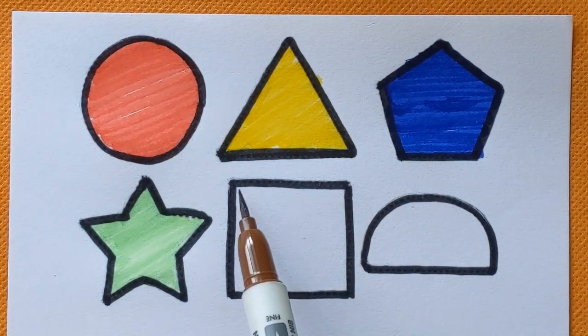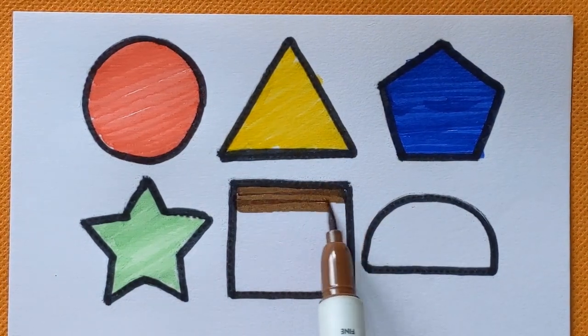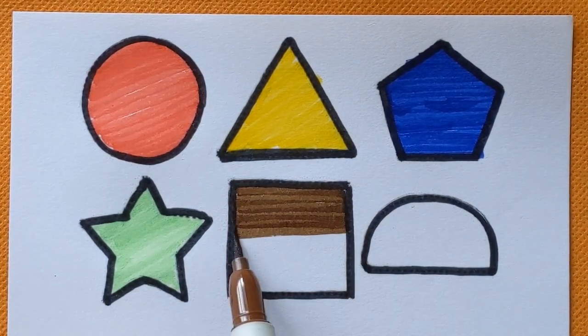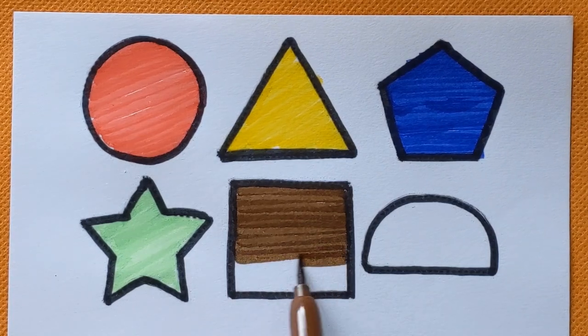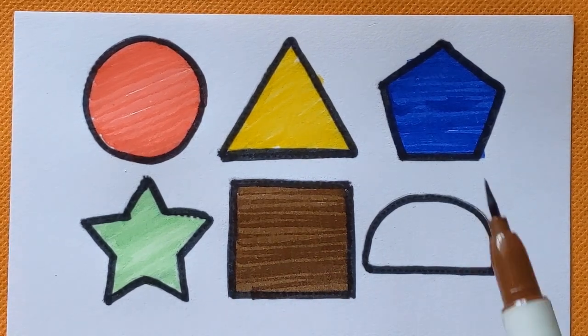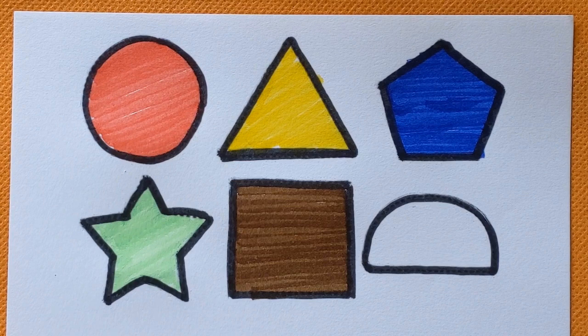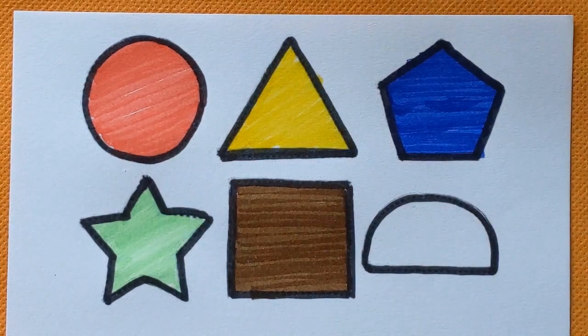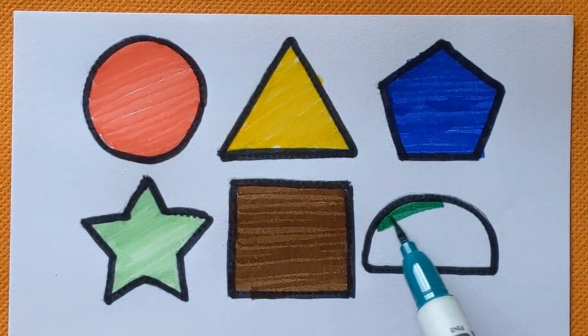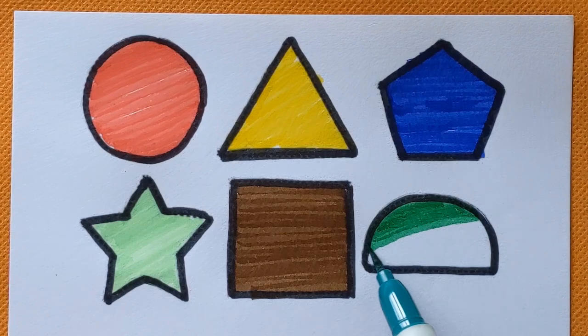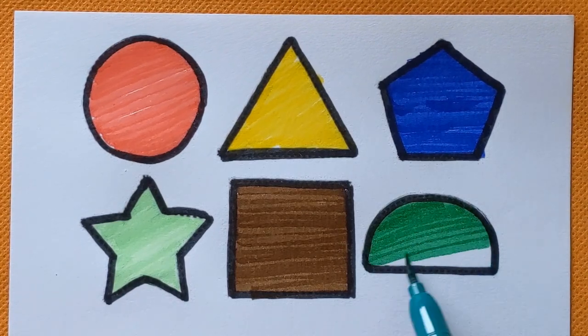Square. Square shape with a brown color. And last one is semi-circle. Semi-circle with a dark green color.